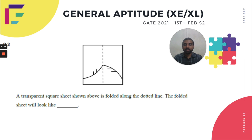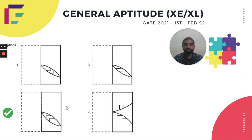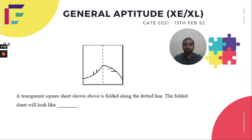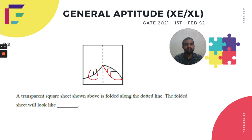Moving to the next question: a transparent square sheet shown above is folded along the dotted line — what will the folded sheet look like? We treat the dotted line as a mirror. Drawing the mirror image of the part on the right side, the image of the angled line and the two parallel lines gives us the folded result. Checking the options, option 2 is the correct one.